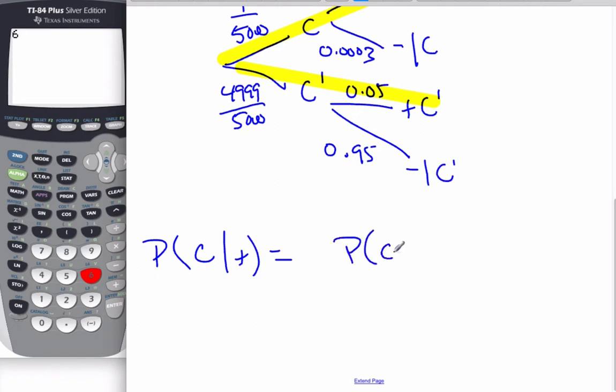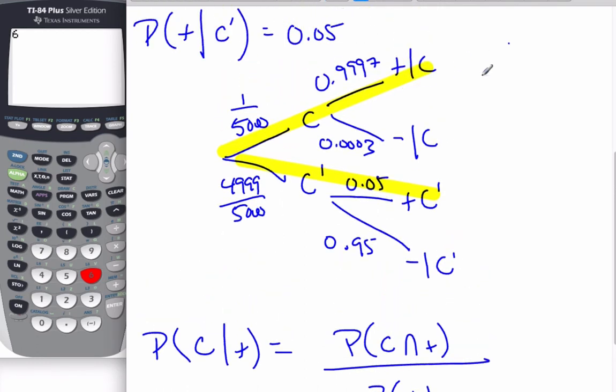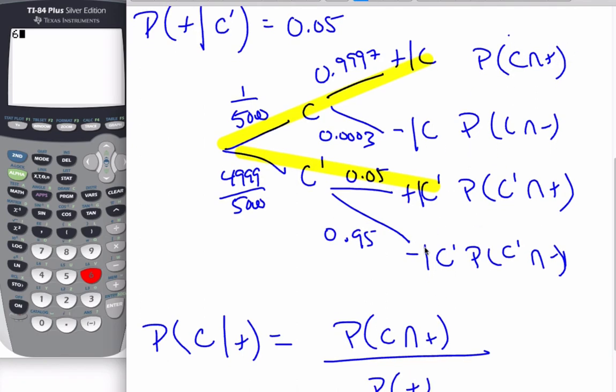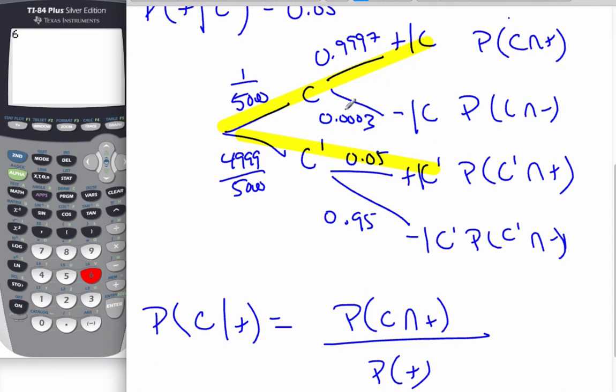we know it's the probability of cancer and positive over the probability of testing positive. Well, when we look at our tree diagram, when we go in this direction, this is the probability, this is the probability of cancer and positive. This is the probability, this branch here is the probability of cancer and negative. And this is the probability of, of not cancer and positive. And this branch will be the probability of not cancer and negative. Okay. So if I want probability of cancer and positive, that's the top. If I want the probability of positive, those are the two yellow branches.